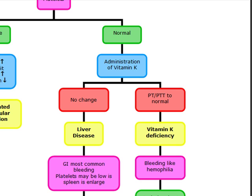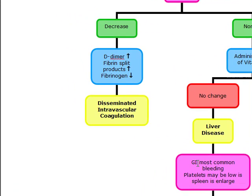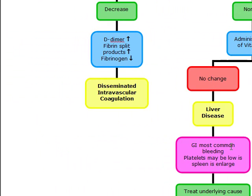With liver disease, there's going to be a decreased production of clotting factors by the liver, and bleeding can occur at any site. The gastrointestinal system is going to be the most common site of bleeding. The PT is going to elevate first and is usually more severely elevated. You treat the underlying cause, and if you have very severe bleeding — such as melena — you can use FFP in these patients as well.